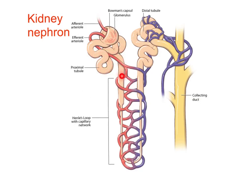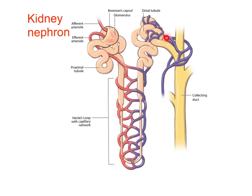The water, salts, glucose and everything make a journey along and down this loop, back up, through this bit, and then down the collecting duct to the ureters and ultimately to the bladder. Meanwhile, the blood leaves the kidney purified, off to the renal vein. So the blood from the renal artery comes in, it's put under immense pressure, and all of the glucose, water, amino acids and urea are squeezed into here. That waste trickles through before going down the collecting duct to be stored in the bladder.